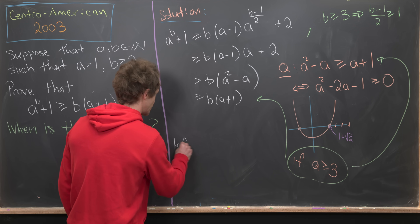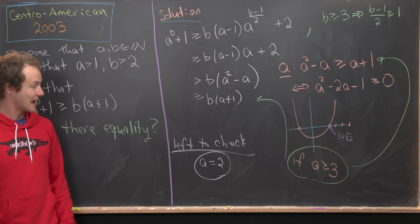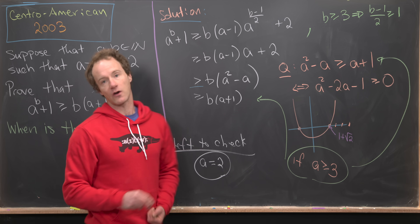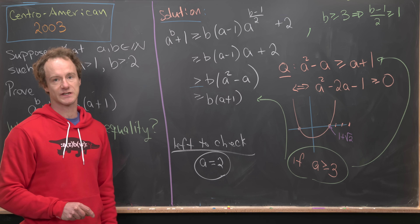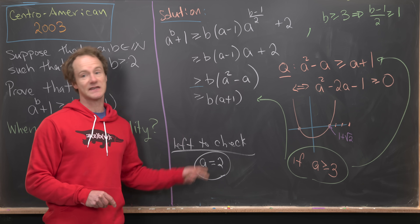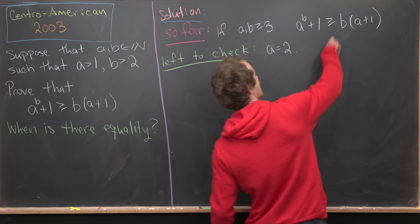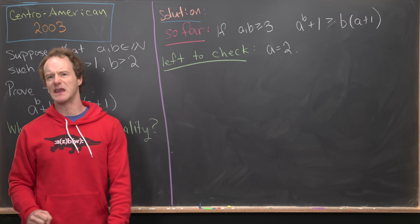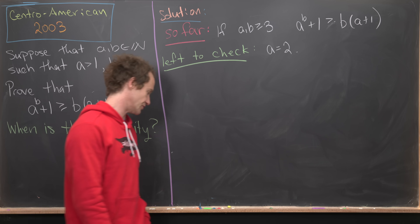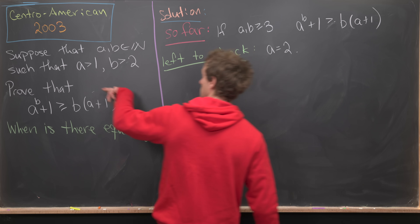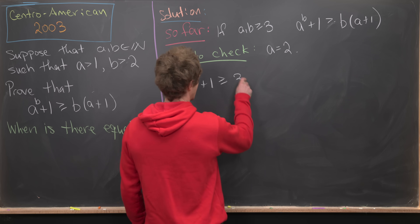All that's left to check is the case when A equals two. The strict inequality we used means there are no possibilities for equality if A is bigger than or equal to three, leaving equality only possible when A equals two. Substituting A equals two reduces the inequality to two to the B plus one is bigger than or equal to three times B.